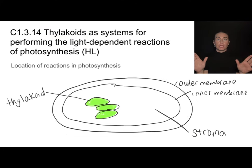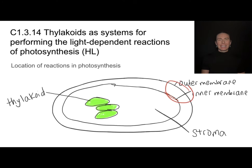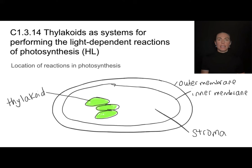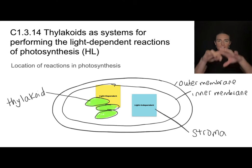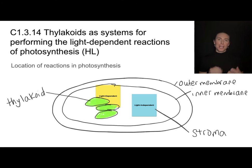To wrap up, let's get a broad sense of where things in photosynthesis are happening. A chloroplast has an outer and inner membrane — together they make up the envelope. Inside are thylakoid discs; a stack is called a granum. The thylakoid discs are where the light-dependent reactions occur, since the pigments there absorb light. The light-independent reactions, which don't need light, occur in the stroma — the watery substance filling the rest of the chloroplast. That's where the Calvin cycle happens, which we'll cover in another video.